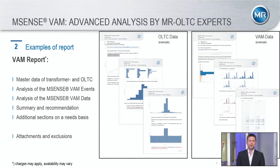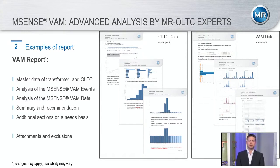Here is an example of how this report can look. You have master data in there — transformer and tap-changer data — and there will be a detailed report of the events and data, along with a summary and recommendations with pictures. If there are special events or special happenings, this report can vary from basic to extended information.